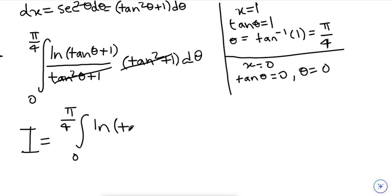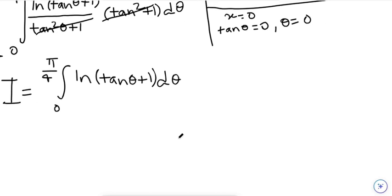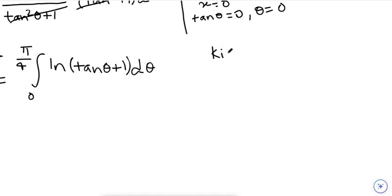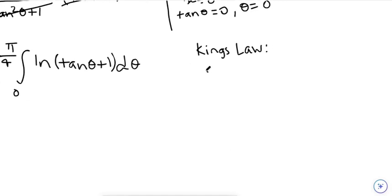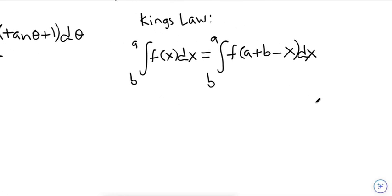This might still look really complicated, but the easy way to do this is to remember King's Property, which says that the integral from a to b of f(x) dx is the same as the integral from a to b of f(a + b − x) dx.